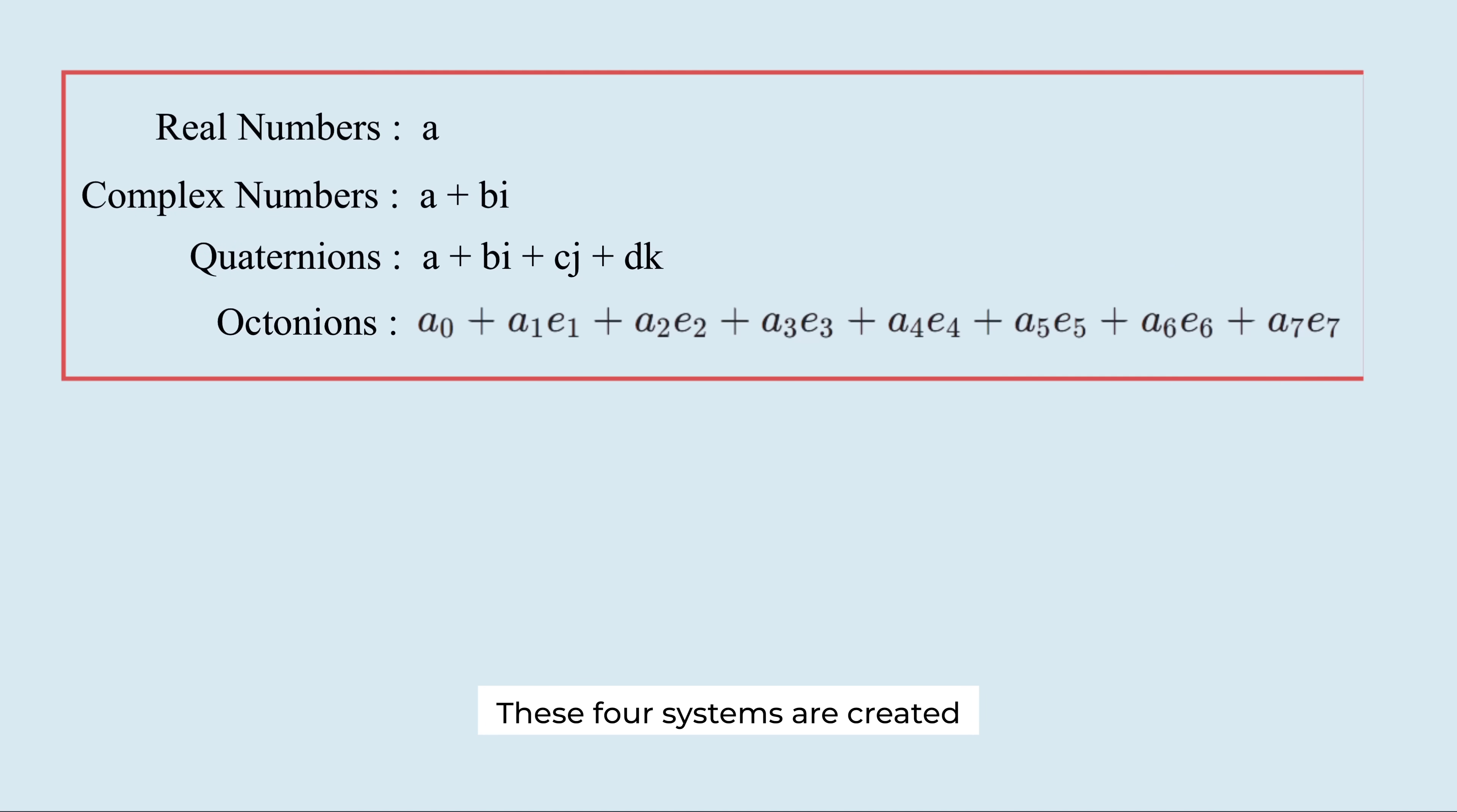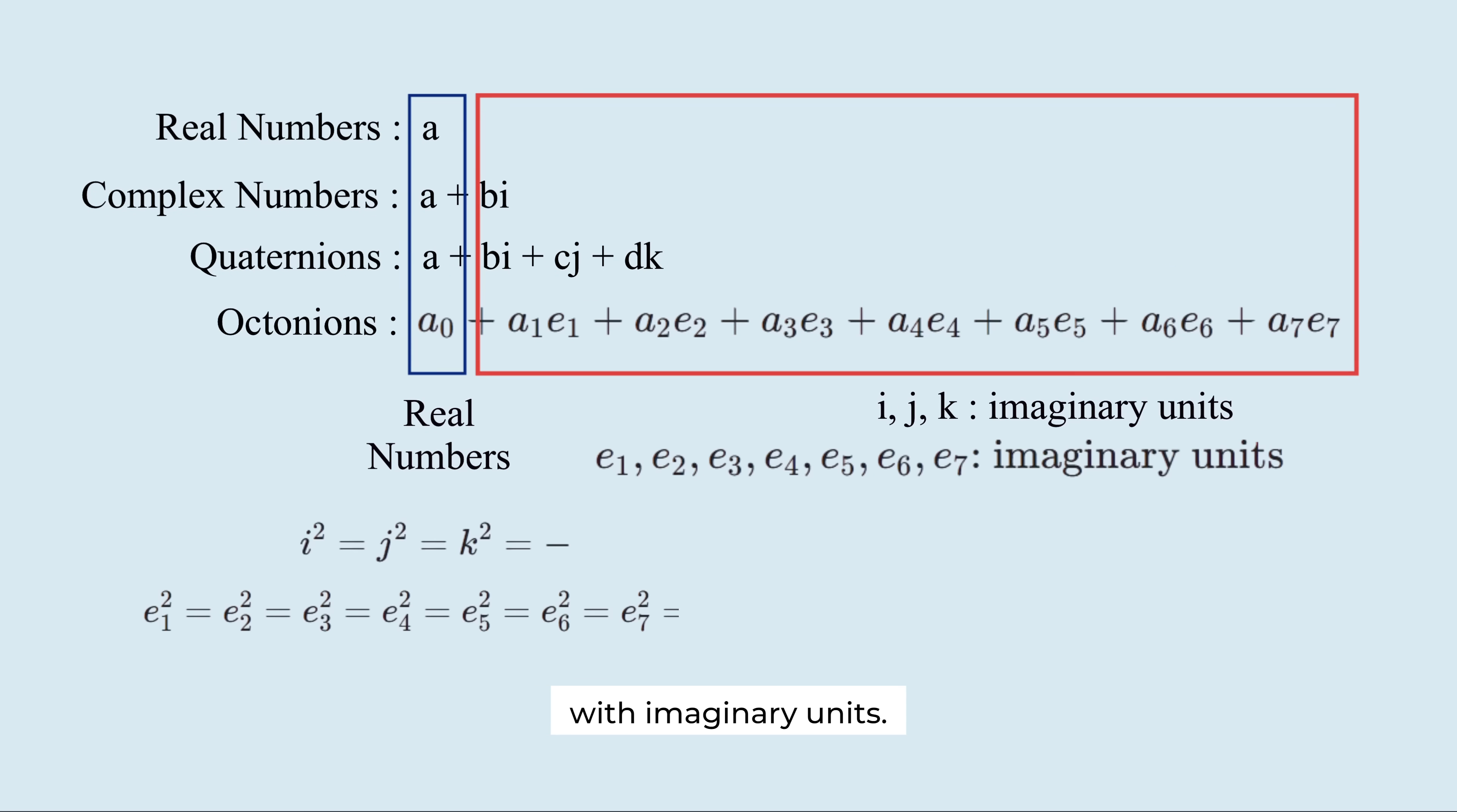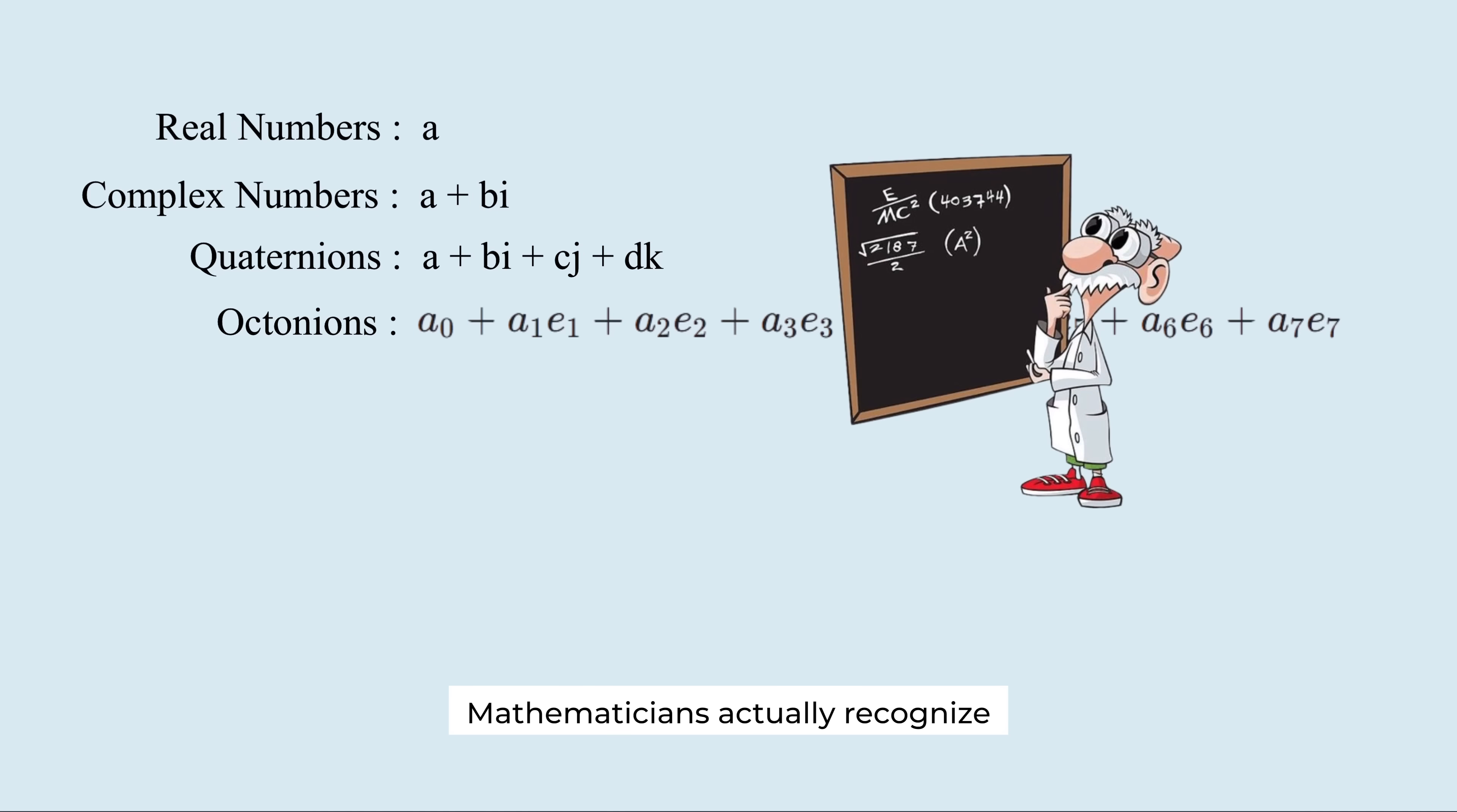These 4 systems are created by combining real numbers with imaginary units. Mathematicians actually recognize only these 4 as true number systems. The reason is simple and clear.